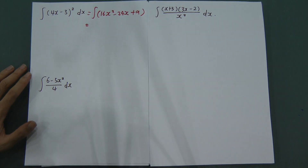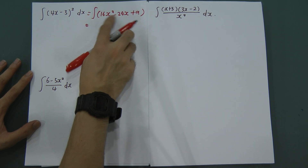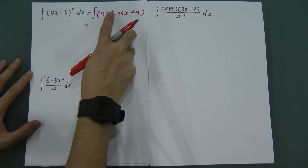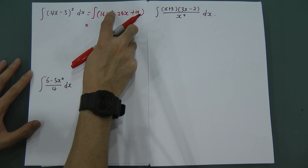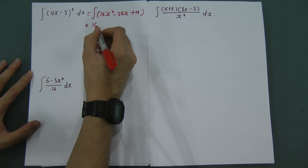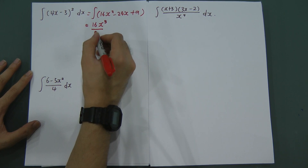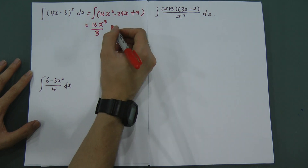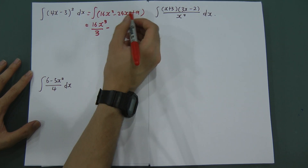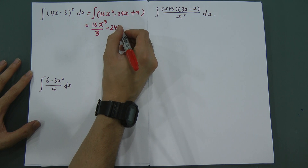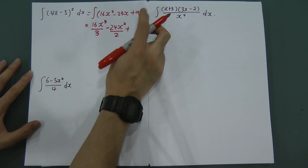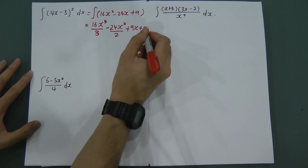Then I integrate term by term. For 16x², the power is 2, add 1 to get 3, and divide by 3, giving 16x³ divided by 3. For the next term, power is 1, add 1 to get 2, divide by 2, giving minus 24x² divided by 2. For the constant 9, you just write 9x. Remember to add C.